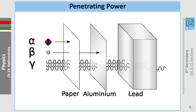When it comes to penetrating power: alpha can be stopped by a piece of paper; beta is more energetic, penetrates paper, and can be stopped by an aluminum sheet; while gamma radiation is far more energetic and cannot even be stopped by a thick wall of lead.